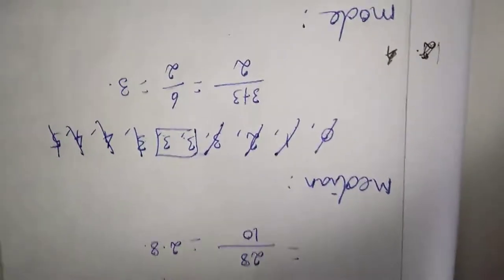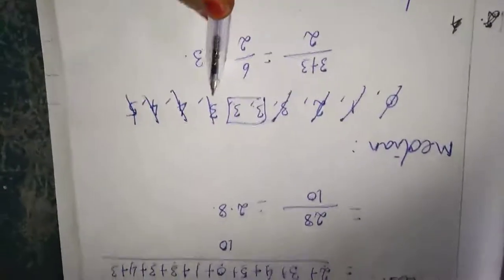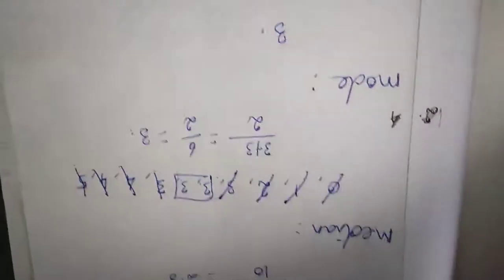Next is mode. Mode means how many times a number repeats. Here we see 3 appears most frequently, four times. So the mode is 3.